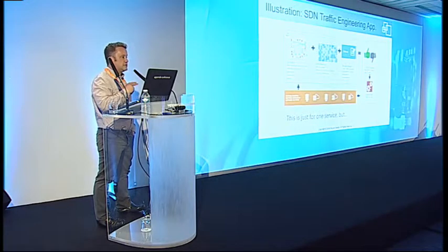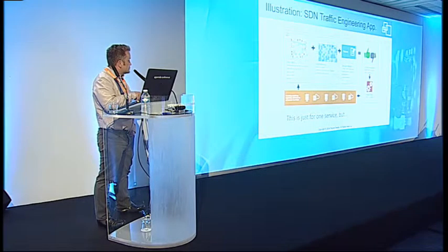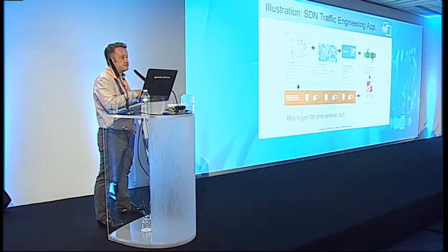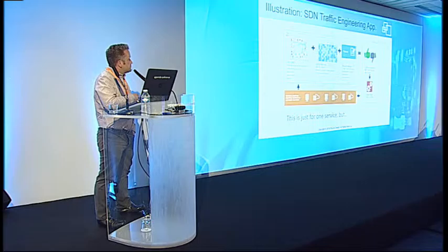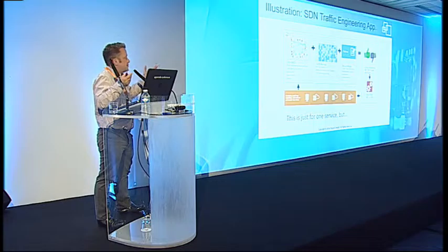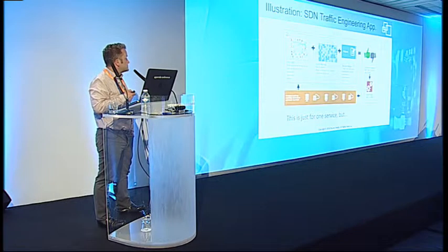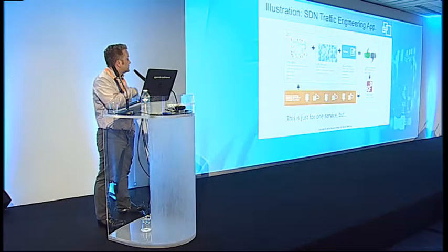I'm going to talk about the SDN traffic engineering application for the wide area network. The application works like this: you have the network and telemetry, from which you derive three things — topology, traffic matrix, and policy, which in this case means what you're trying to optimize. From these you generate recommendations — link metrics or tunnel paths — use the SDN controller to provision, then go back to monitoring. It's a full circle.